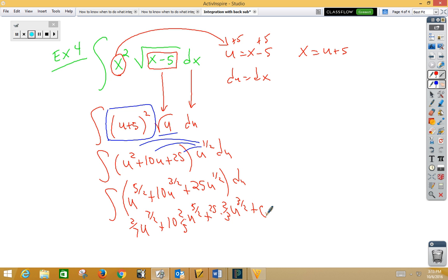Not really u, so plug back in 2 sevenths plus u is x minus 5 to the 7 halves plus, well here I can cross cancel the 10 and the 5 making it 2. So I get a 4 x minus 5 to the 5 halves plus 4 x minus 5 to the 5 halves plus c.